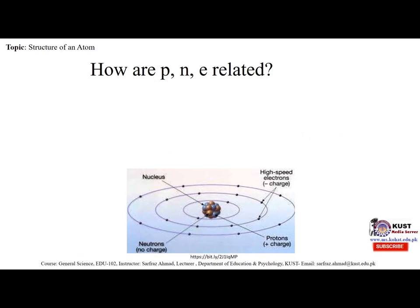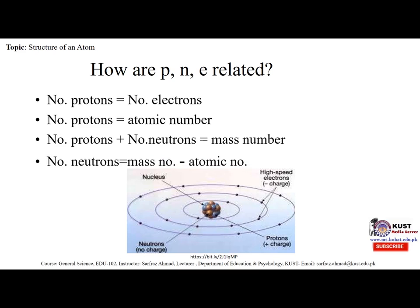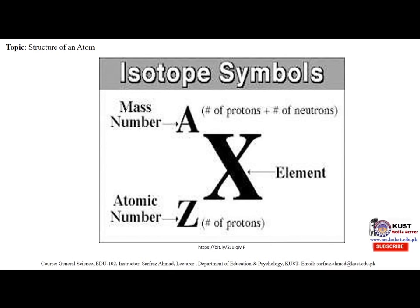How are protons and electrons related? The number of protons equals the number of electrons. The number of protons equals the atomic number. The number of protons plus the number of neutrons equals the mass number. The number of neutrons equals the mass number minus the atomic number. In isotope symbols, A shows the mass number, X shows the element symbol, Z shows the atomic number, and A shows the total number of protons plus neutrons.